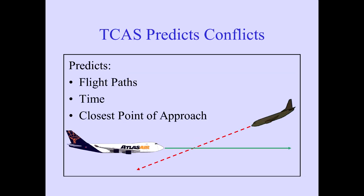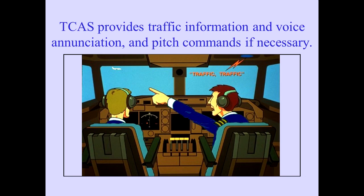TCAS then predicts current flight paths and time to closest point of approach. TCAS displays traffic information using symbols on the ND. If traffic requires special attention from the crew, TCAS issues voice annunciations, traffic symbols on the ND, and, if necessary, pitch commands on the PFD.